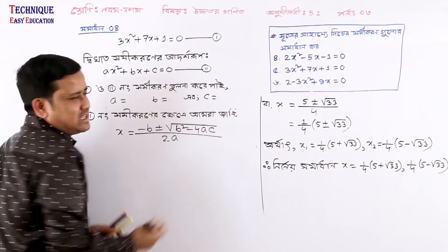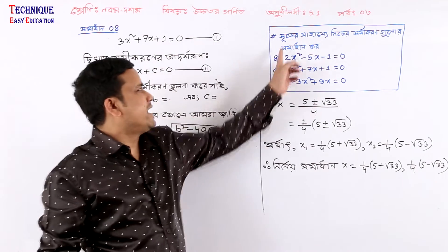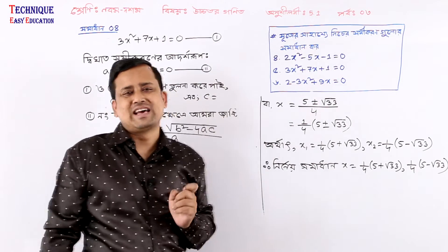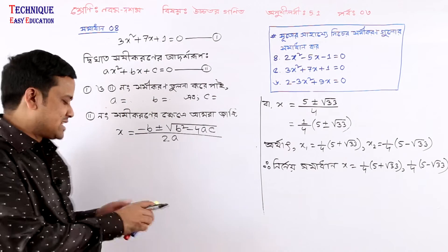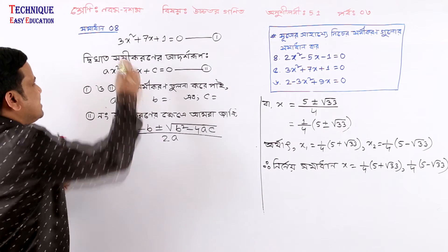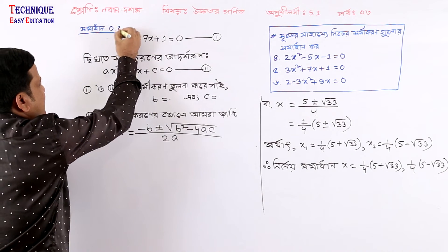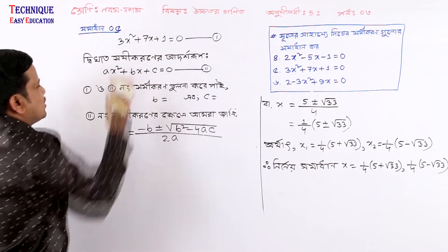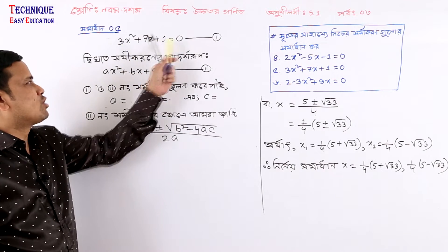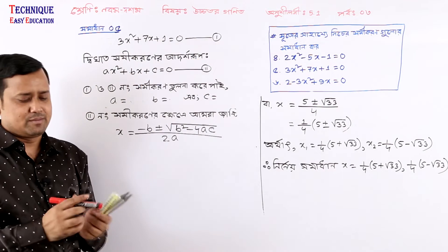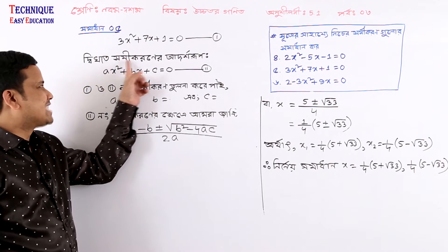So this gives us: 6x squared plus 1 equal to 0. We identify the coefficients — a is 3, b is 7, and we assign values for number 5 and number 6 accordingly.